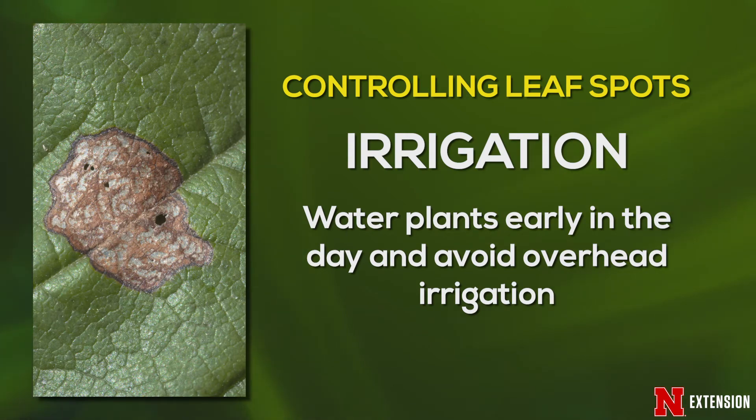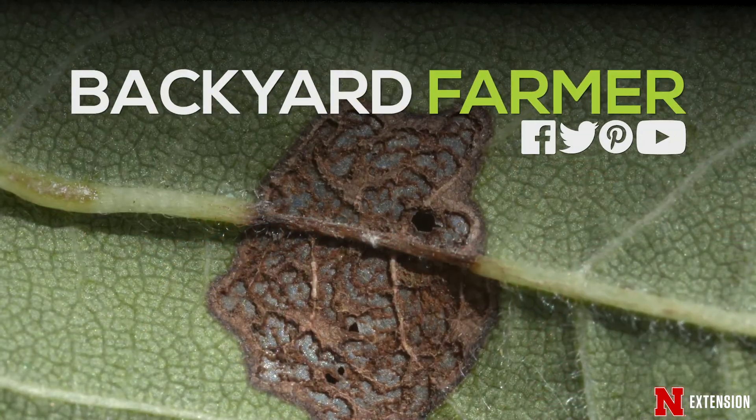If you are looking for chemical control, you really need to know what you're dealing with. A fungicide will not work on a bacterial leaf spot — so if you have bacterial speck on peppers, fungicides will not control that. It is very important to always know what sort of leaf spot you're working with before thinking about any control options.